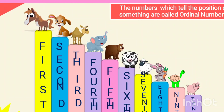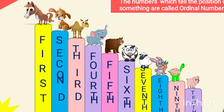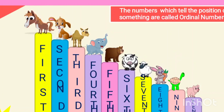Sheep is at seventh position, rabbit is at eighth position, tortoise is at ninth position, and pig is at the tenth position. So, students, what do you understand by ordinal numbers? The numbers which tell the position of something are called ordinal numbers.